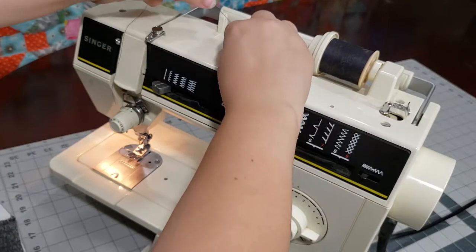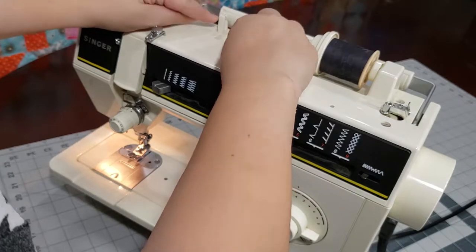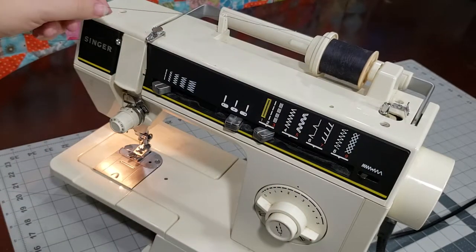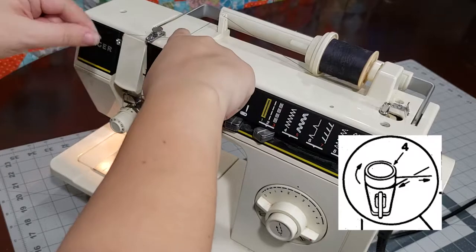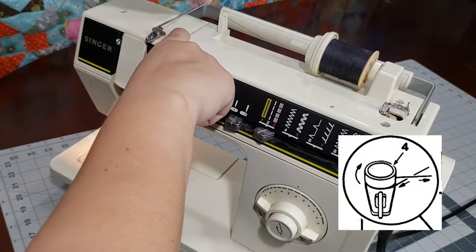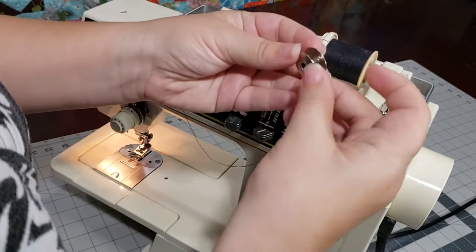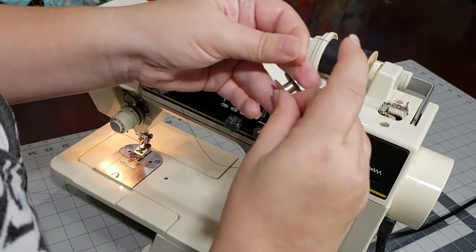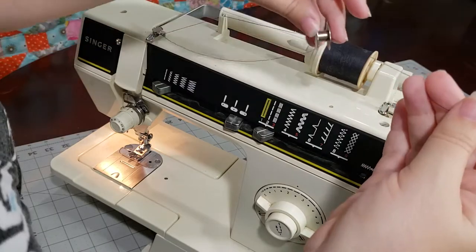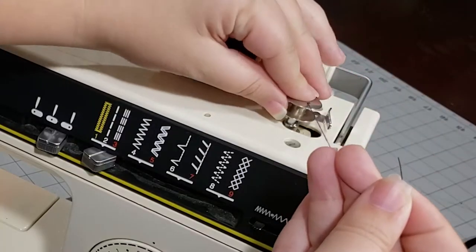Lead the thread from the spool and snap it into both sides of the first thread guide. Wind the thread clockwise around the front of the bobbin winder tension disc. Guide the thread through the hole in the bobbin from the inside toward the outside. Place the bobbin on the spindle and push it to the right.